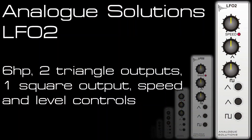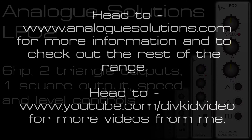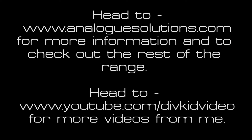The LFO2 from Analog Solutions is a nice simple module — a sort of bread-and-butter utility that you want to dot around your system. The independent depth control for the triangle and the square is a nice addition as it saves using attenuator modules, giving you more control for modules that don't have CV input attenuators. For more information head to analogsolutions.com, and for more videos head to youtube.com/divkidvideo.